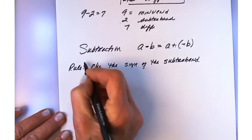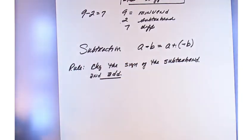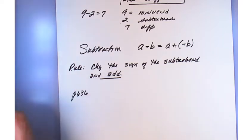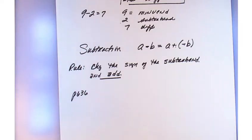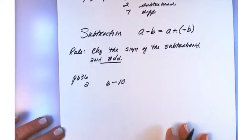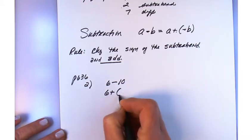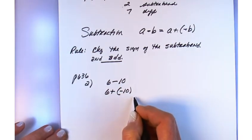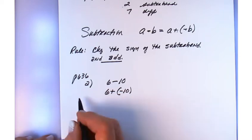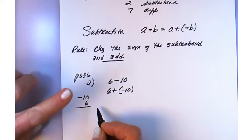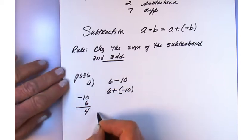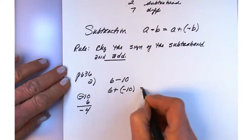Keep that rule in mind so that every time you do a subtraction problem you're saying it to yourself. Looking at page 636: we have 6 minus 10. We change that to addition — positive 10 becomes negative 10, so we have 6 plus negative 10. You might rewrite it vertically, cover the minus sign, and say 10 take away 6 is 4, then use the sign of the greater absolute value: minus 4.